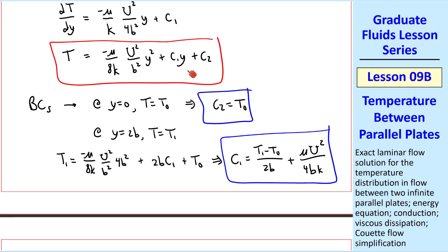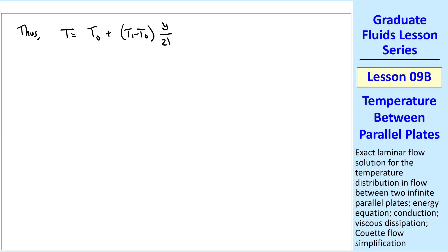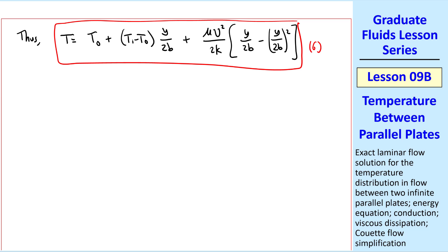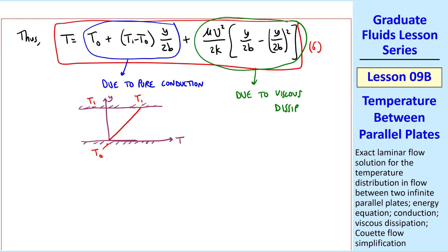Finally, we plug in these constants into this equation, and we get our final answer for t, the temperature field, which we will call equation 6. We note that this part is due to pure conduction. Even if there were no flow, temperature would go from t naught to t1 by pure conduction. Even if the fluid were a solid, we'd still have this linear temperature increase due to this component.